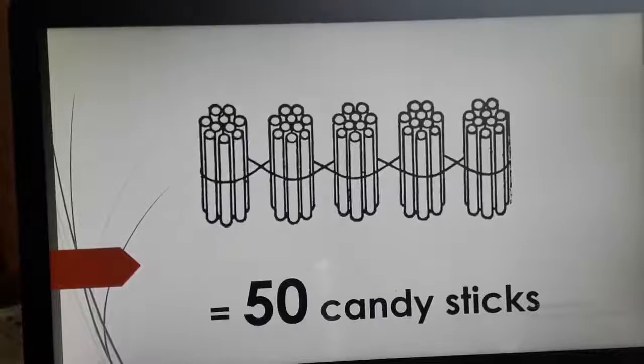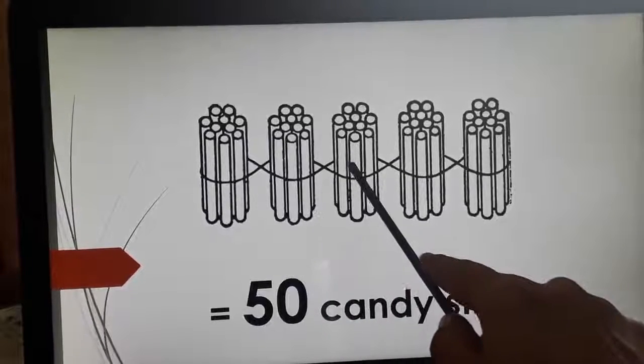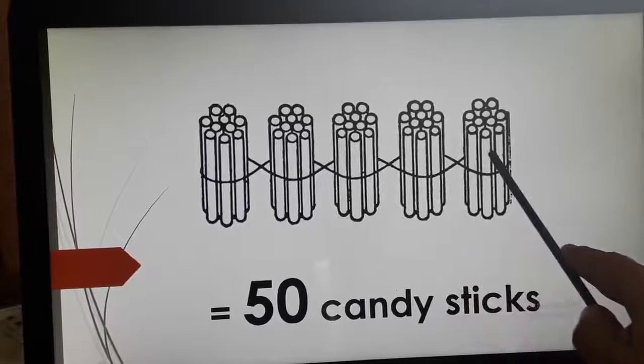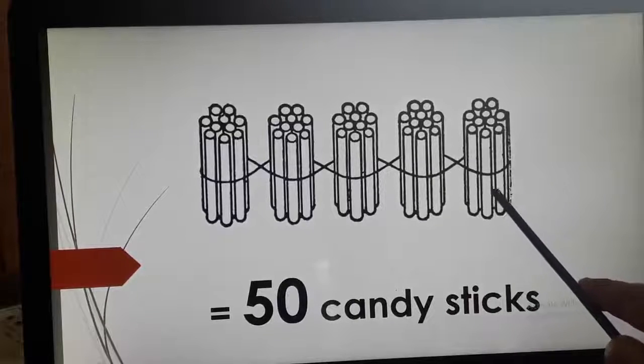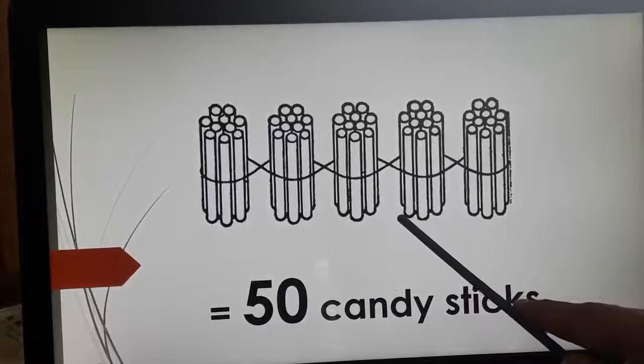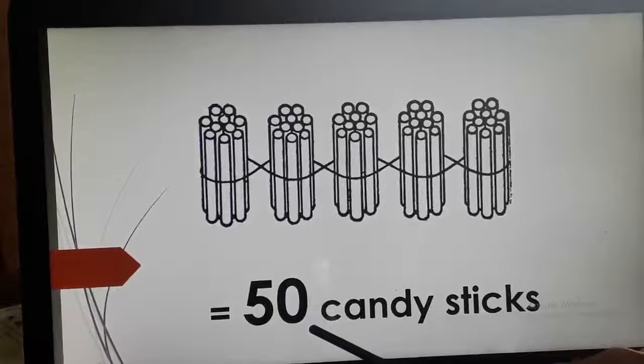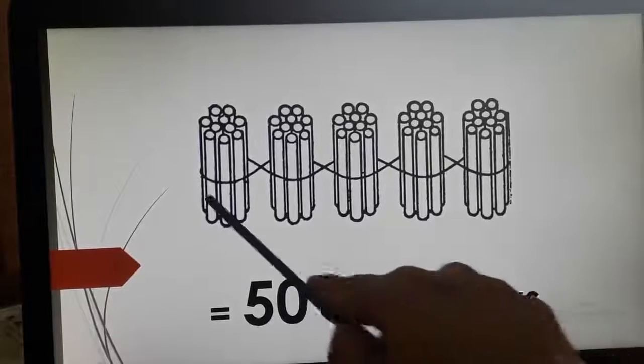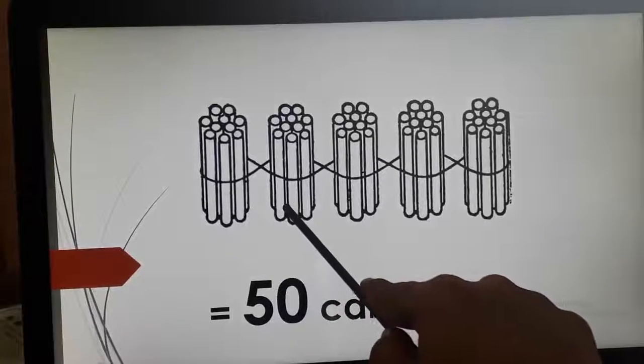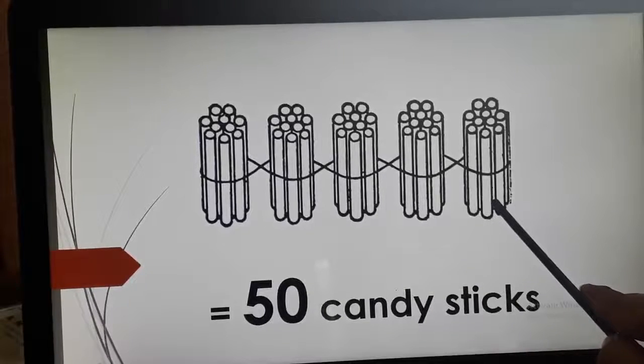So, here we have total 1, 2, 3, 4 and 5 bundles. How many bundles we have? We have total 5 bundles. And each bundle is having 10 candy sticks. So, here 10, 20, 30, 40 and 50.